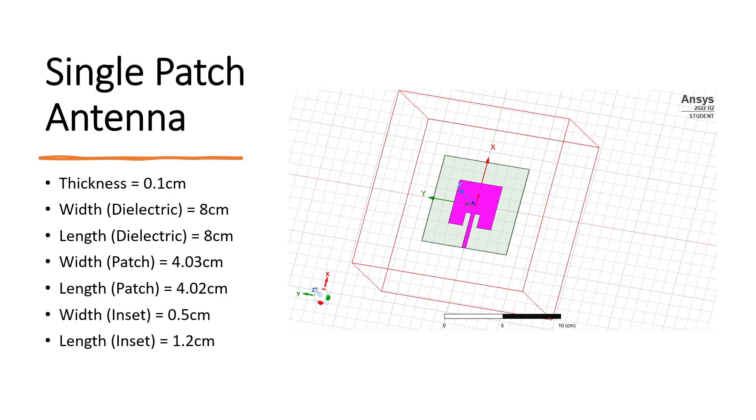Here is my single patch antenna design. The most important thing here is the length. I used a length of 4.02 cm. After some optimizations and trials, I found out that 4.02 cm is the best solution for my problem.